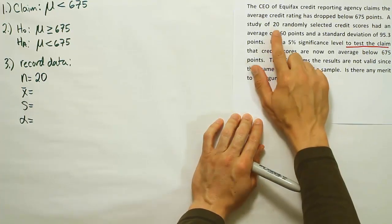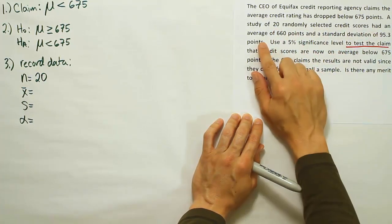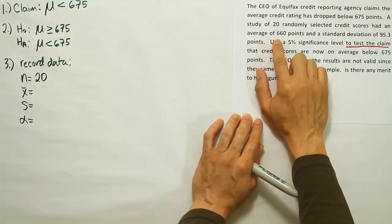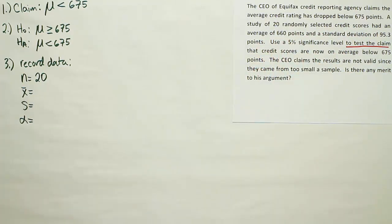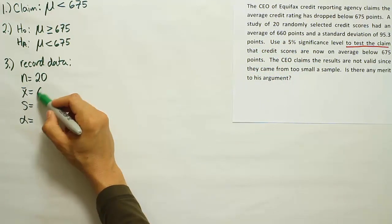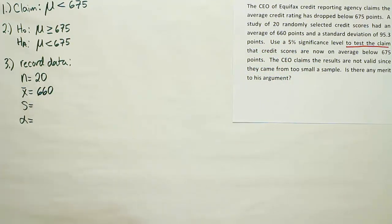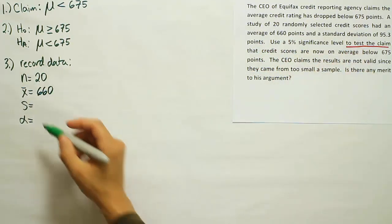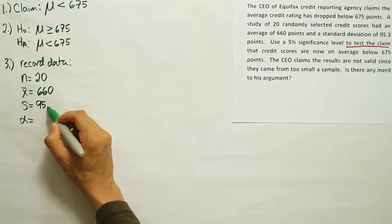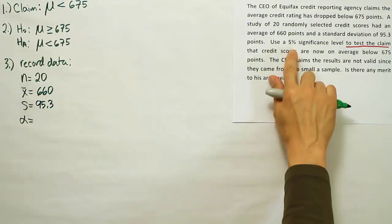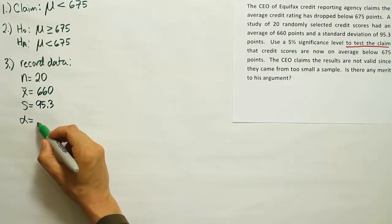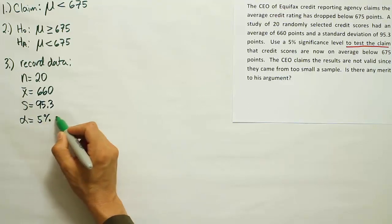A study of 20 randomly selected credit scores, so N is 20. 20 randomly selected credit scores had an average of 660 points. So the average value here is 660. And a standard deviation of 95.3. And then a 5% significance level is listed there.